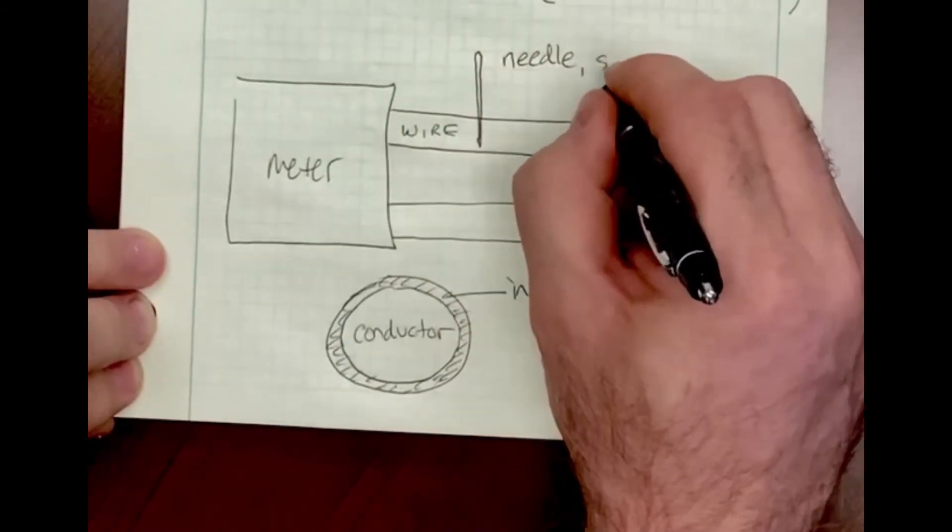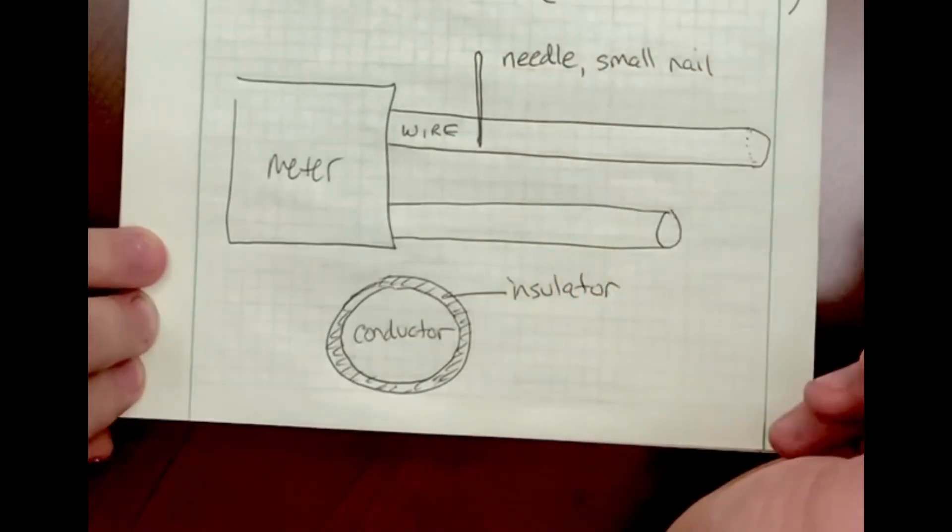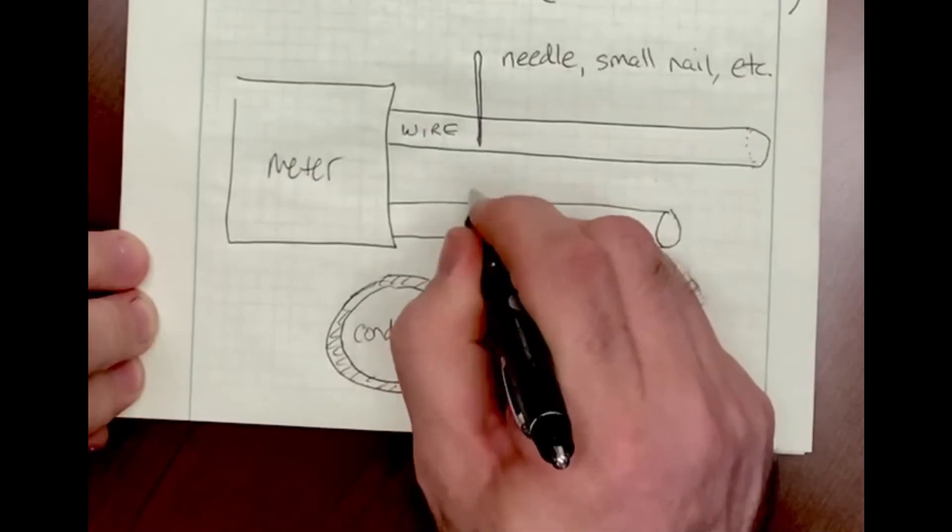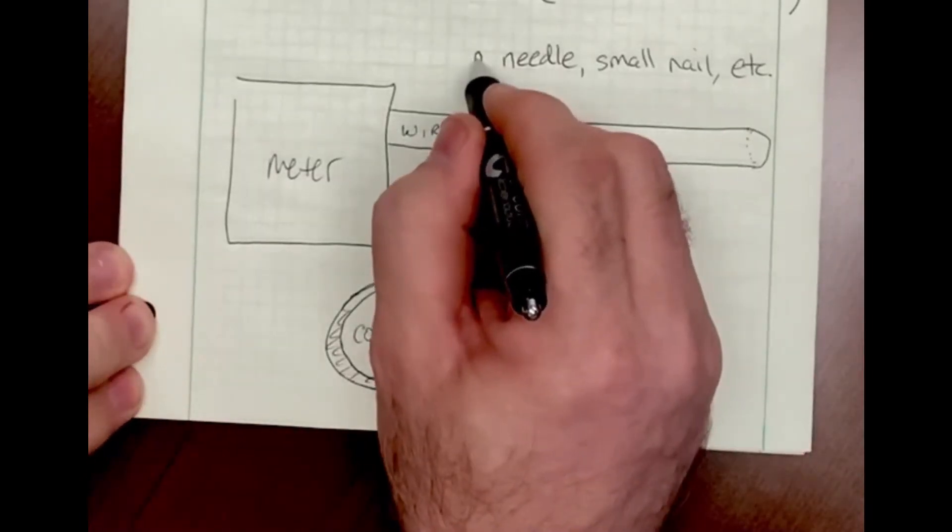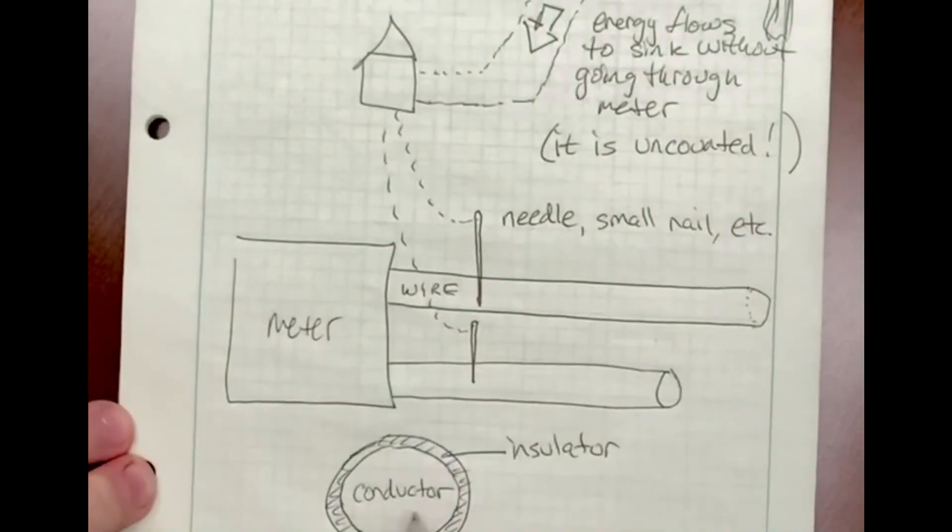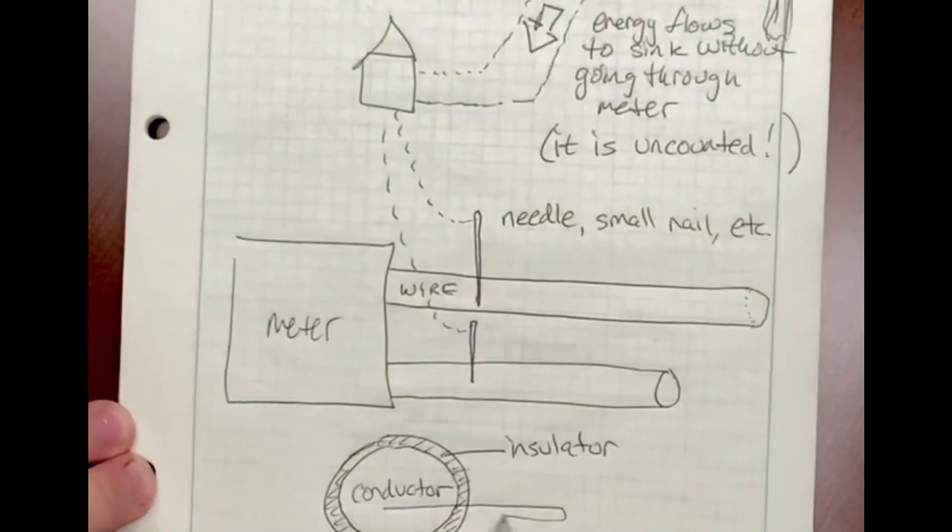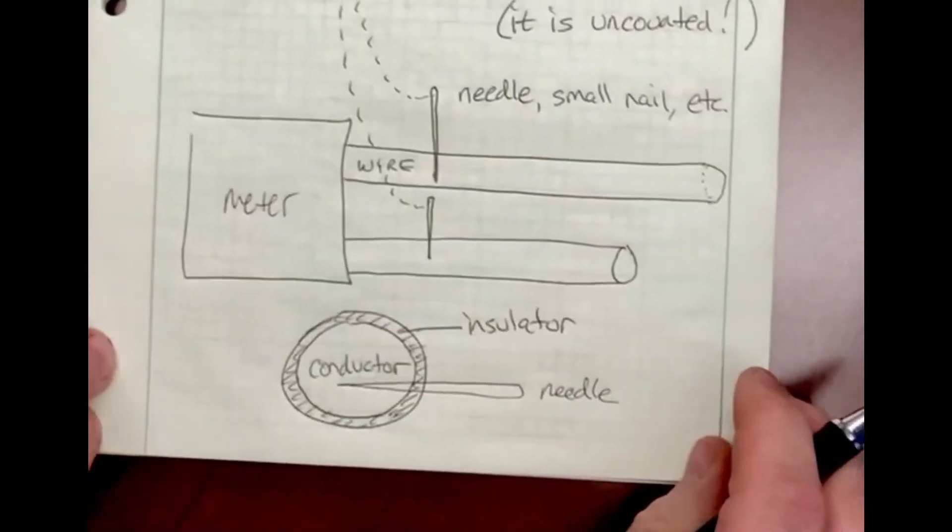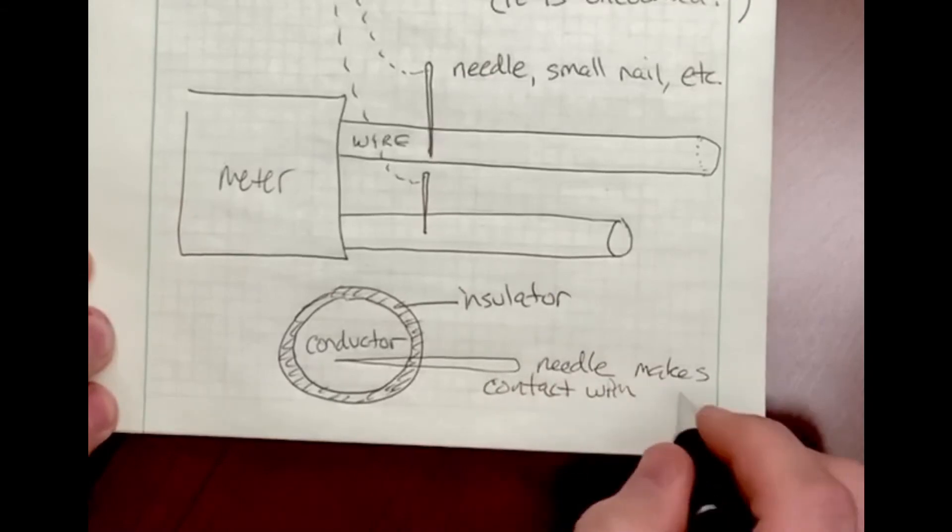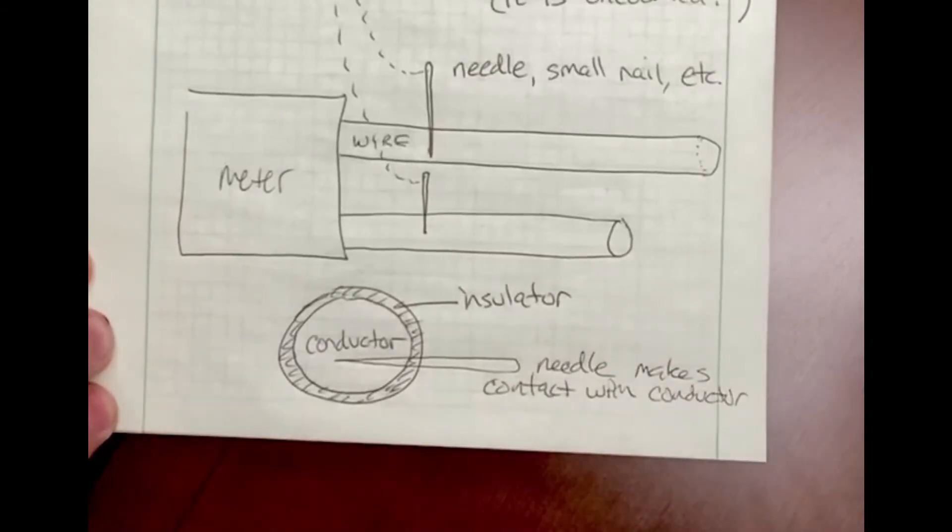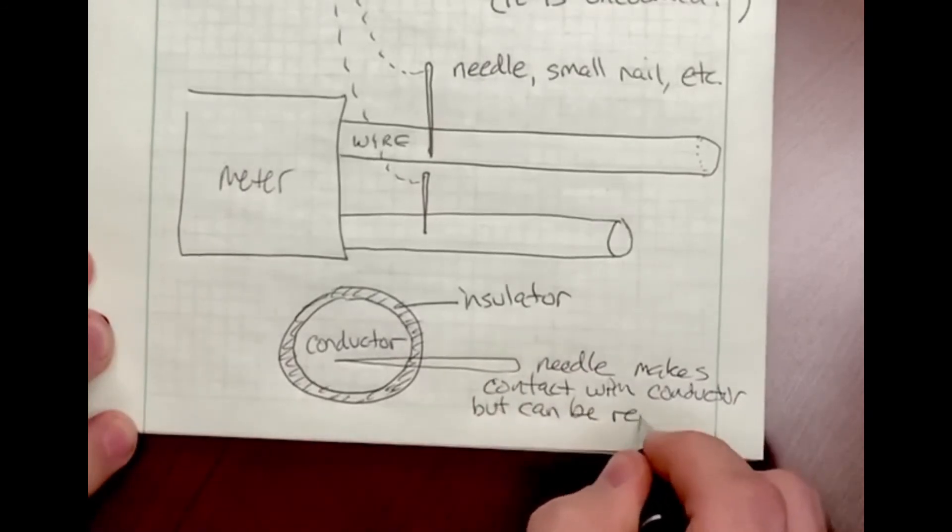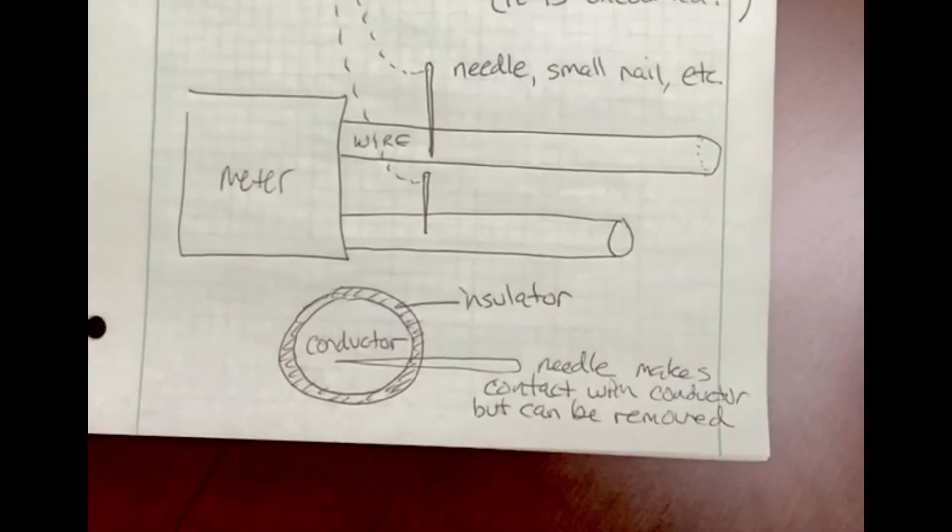One way that people bypass these meters is they take a small nail or a needle or something sharp that can penetrate that insulator, and they stick it in the wire. It makes contact with the conductor—it goes through the insulator, makes contact with the conductor—and then they put wires that go to the load that they intend to power, the sink.